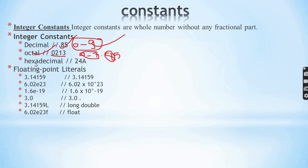Integer constants versus floating point literals, which have a fractional part. For example, 6.02 to the power of 26.